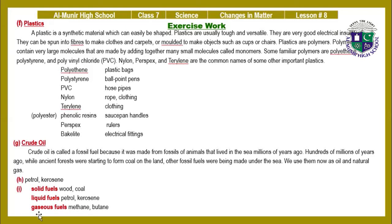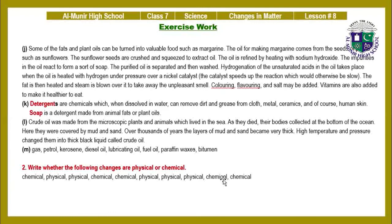Part J — Making margarine: the oil for making margarine comes from the seeds of plants such as sunflowers. The sunflower seeds are crushed and squeezed to extract oil. The oil is refined by heating with sodium hydroxide — the impurities react to form a sort of soap, and the purified oil is separated and washed. Hydrogenation of the unsaturated acids takes place when the oil is heated with hydrogen under pressure over a nickel catalyst. The fat is then heated and steam is blown over it to remove the unpleasant smell; coloring, flavoring, salt, and vitamins may be added.